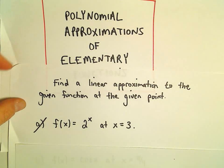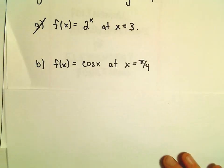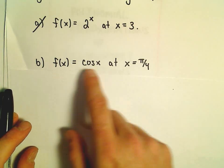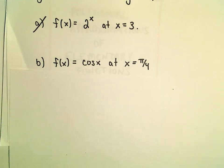One more example of finding a linear approximation. We're going to find the linear approximation for cosine x at x equals π/4.